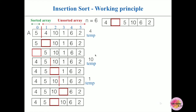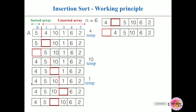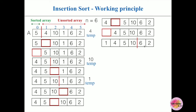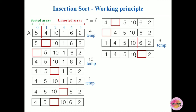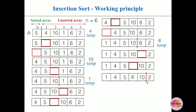No more elements remain in the sorted array, so this is the correct position for 1 — insert it here. Now take 6 and place it in a temp variable; that space becomes empty. 6 is compared with 10: 10 is greater than 6, so move 10 there. Then 6 is compared with 5: 5 is less than 6 (case 2), so this is the correct position for 6 — insert it here.